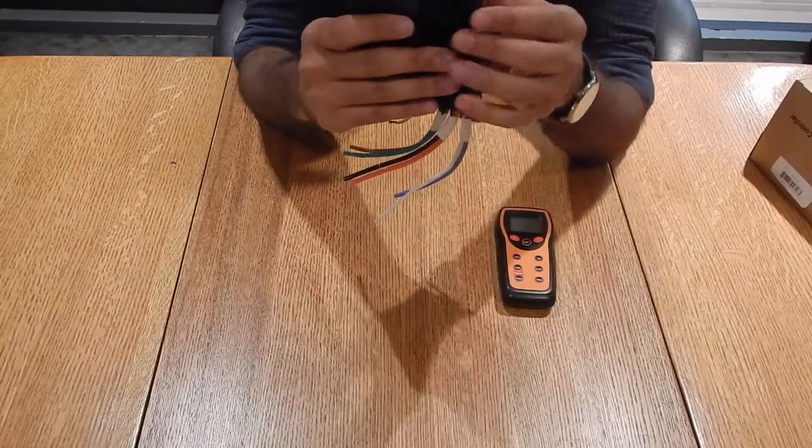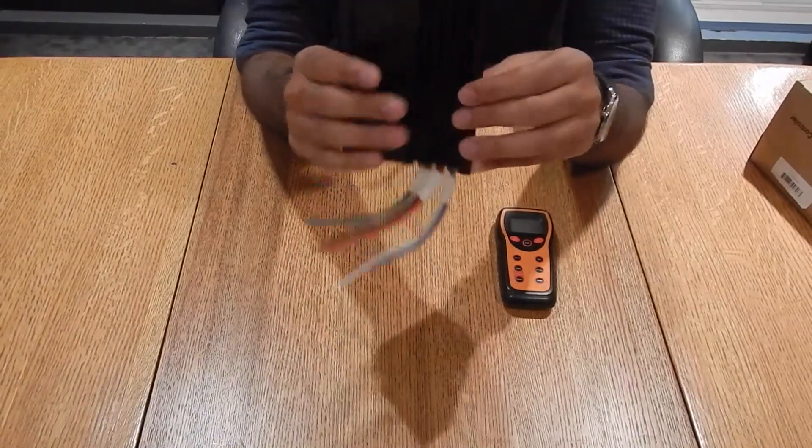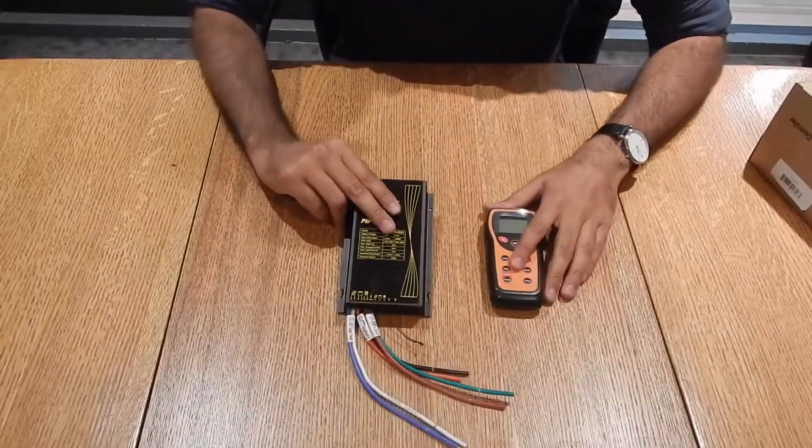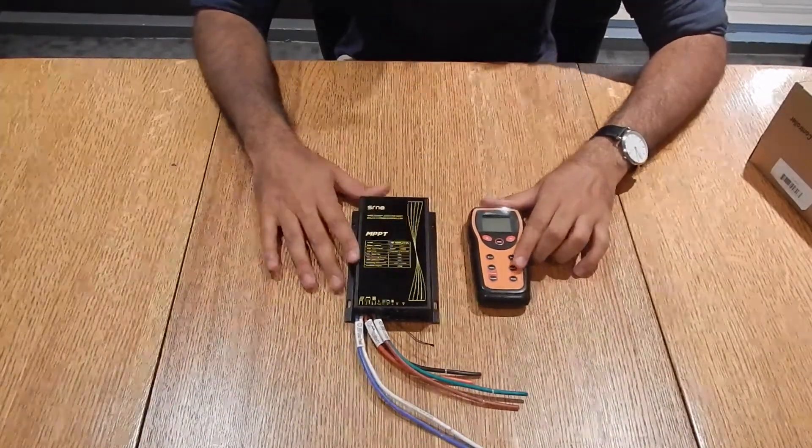It comes with a heatsink in the box and also wall mounts so you can just mount it flush to the wall. And that is the SRNE charge controller and the CUALL2.